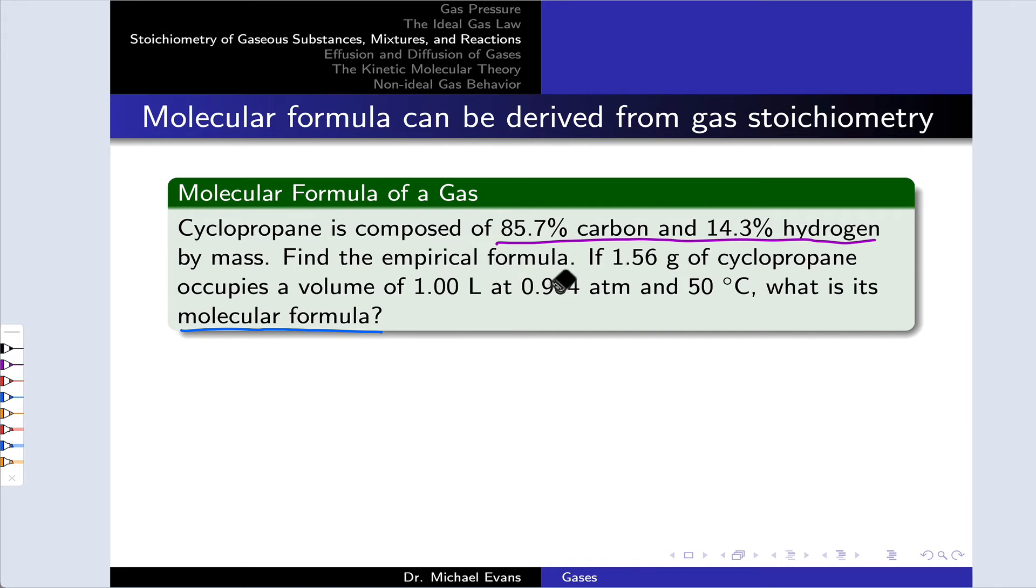Let's turn the clock back and use these mass percentages in the compound to determine its empirical formula. What I'm going to do is assume I have 100 grams of material, find the number of moles of carbon, there it is, just by dividing by the molar mass of carbon, and find the number of moles of hydrogen simply by dividing by the molar mass of hydrogen, and these are the numbers that pop out.